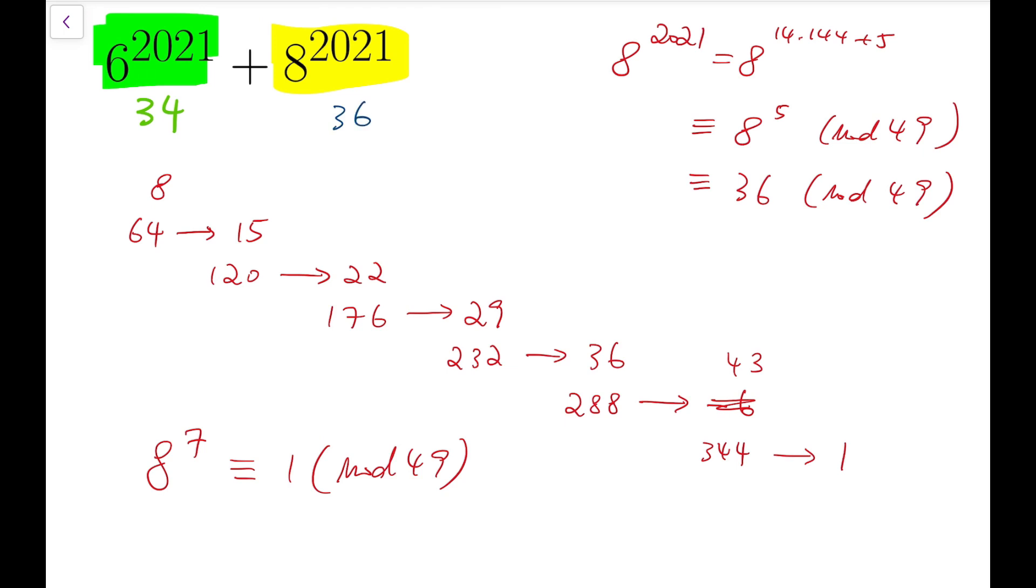And so our final remainder is 34 plus 36 divided by 49. So it should be 21. This is our final answer.